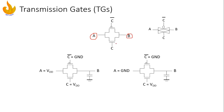Let's see how the transmission gate works. Here we have one transmission gate with input A and output B. To turn on the transmission gate, we give logic 1 at C and logic 0 at C-bar. The NMOS transistor turns on, providing a path from A to B, and the PMOS transistor also turns on, providing another path. If we give 0 at C and 1 at C-bar, the transmission gate turns off and there is no connection between A and B, because both NMOS and PMOS are turned off.